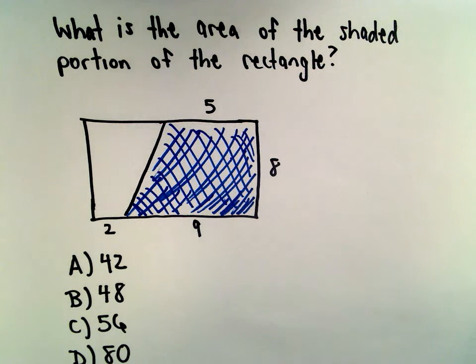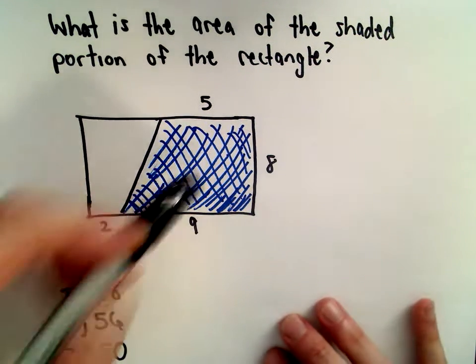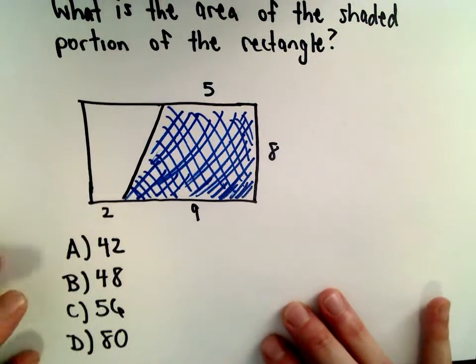Okay, in this example, we want to find the area of the shaded portion of the rectangle, so this portion on the right side here.